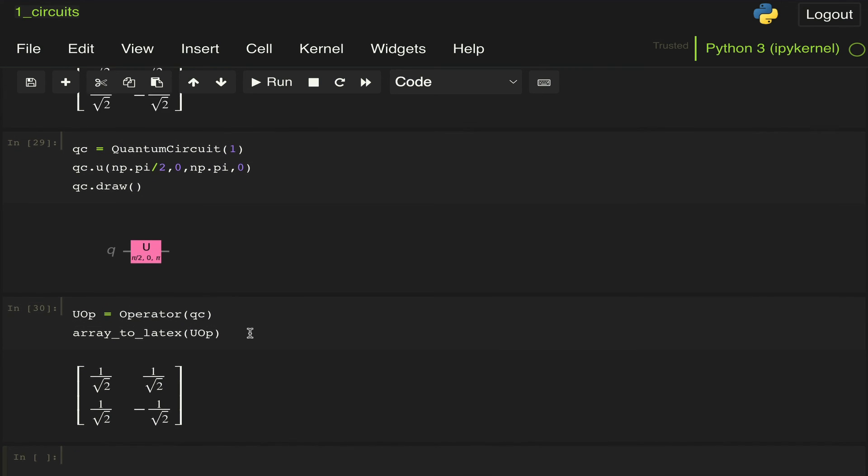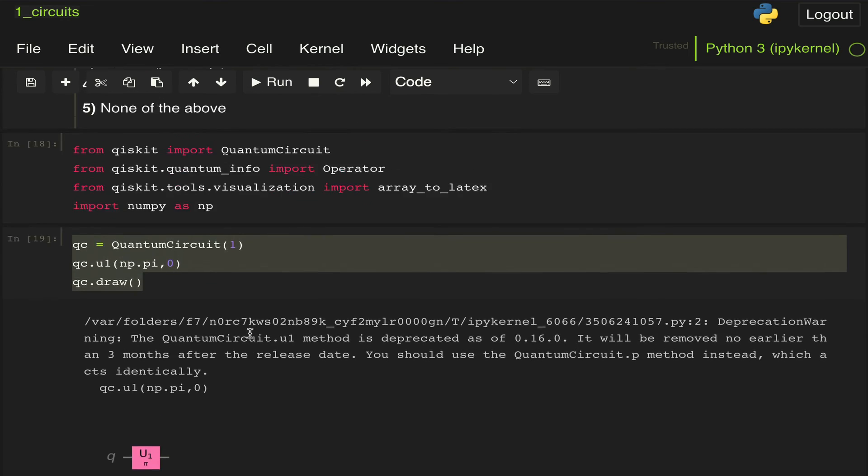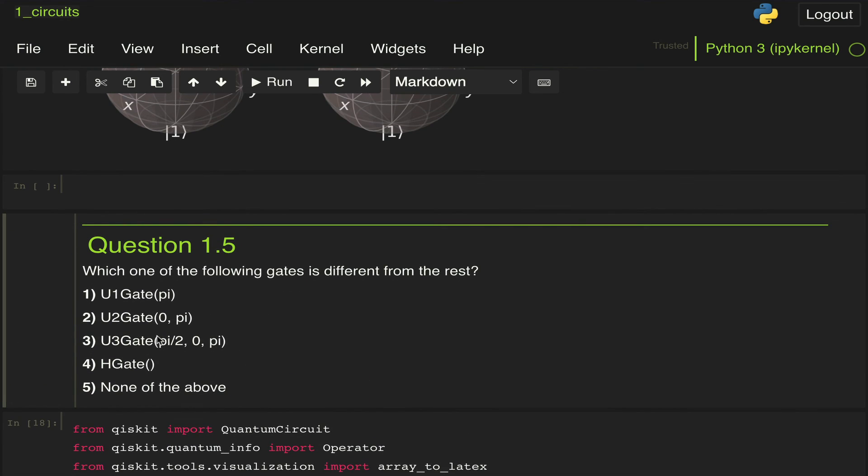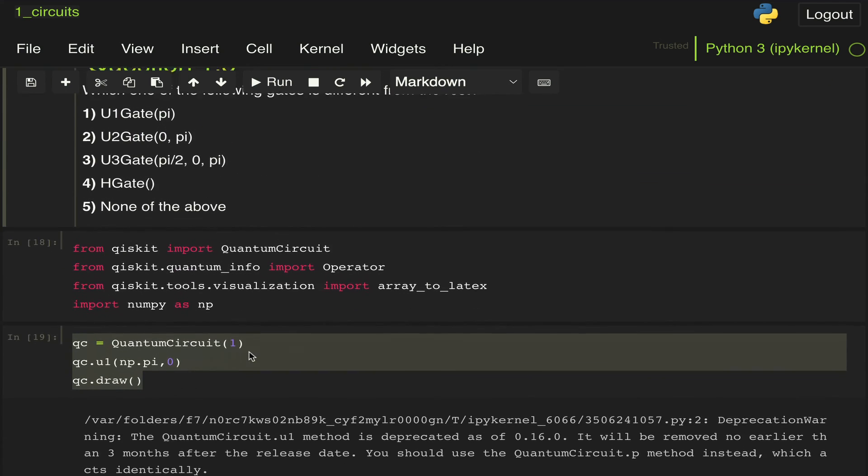So that's all for question 1.5. As we said before, the gate that's different here is a U1 gate with an angle of pi. All the other ones are equivalent to a Hadamard gate. And that concludes the first section of this exam and hope to see you in the next set of videos.